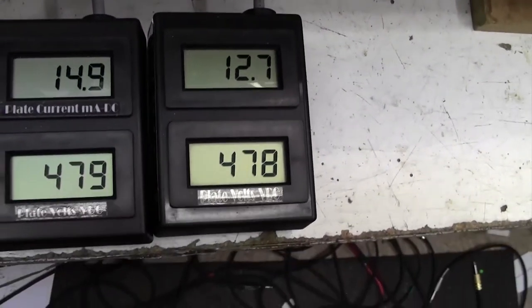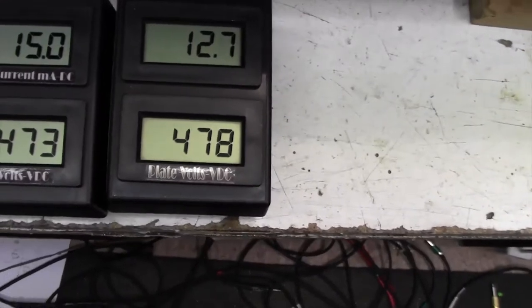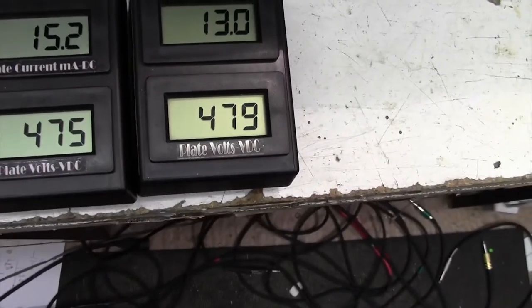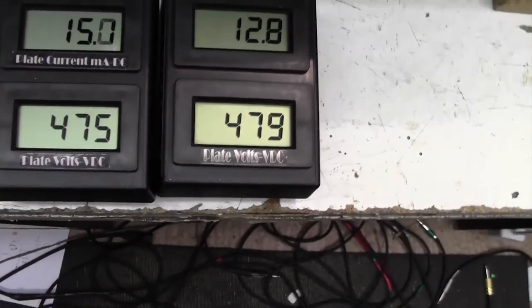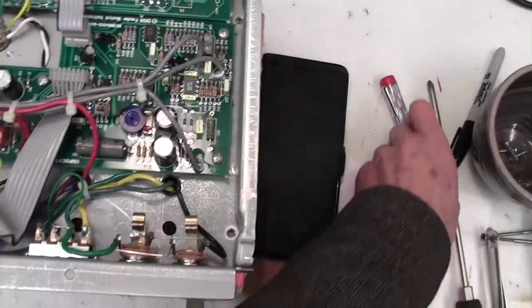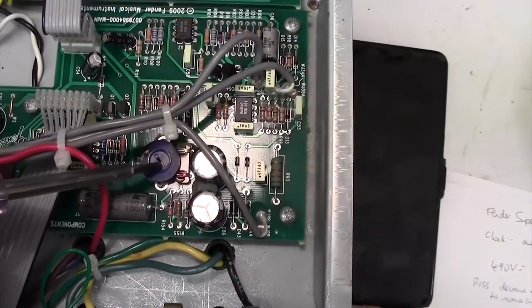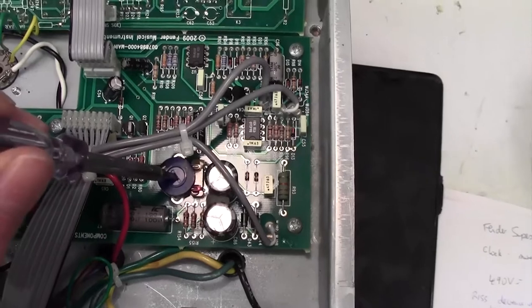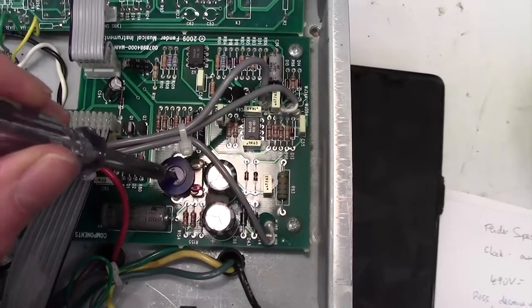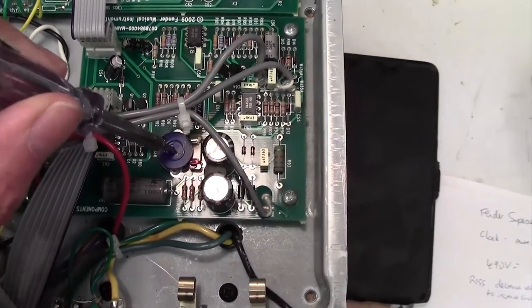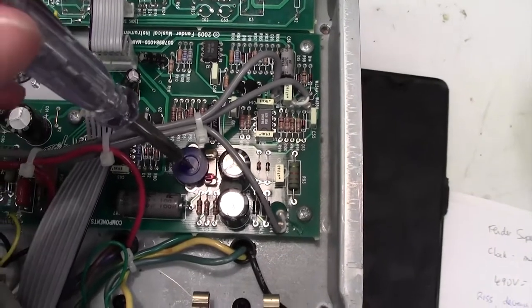The correct bias for this plate voltage is about 40 milliamps. So let me show you how we're going to adjust that. Over on the amplifier here, what we're interested in is this pot here.